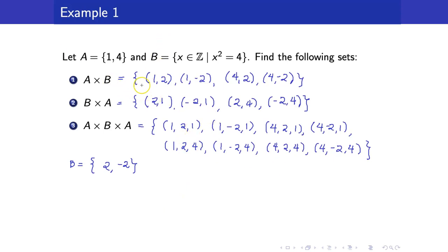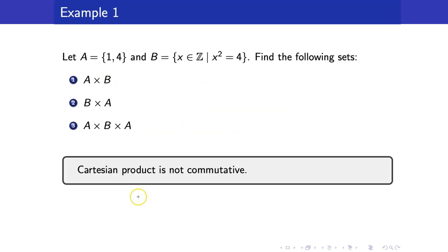Notice that A cross B and B cross A are not the same. That is because the Cartesian product is not commutative.